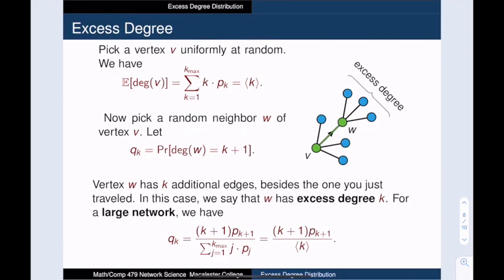So let's assume that we are looking at a network with uncorrelated degrees. Let's pick a vertex at random and look at its degree. The expected value is, of course, just the expected degree of the graph.